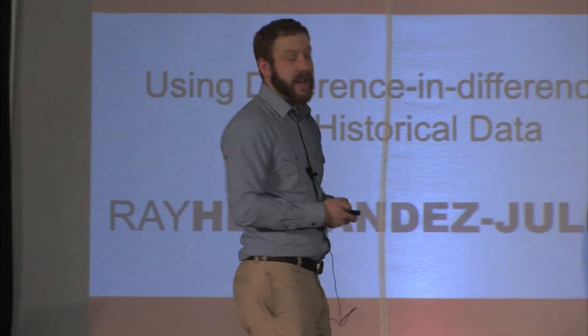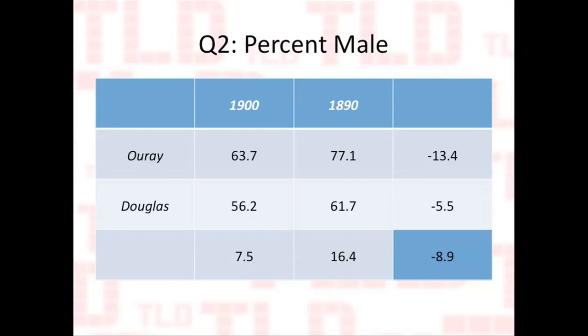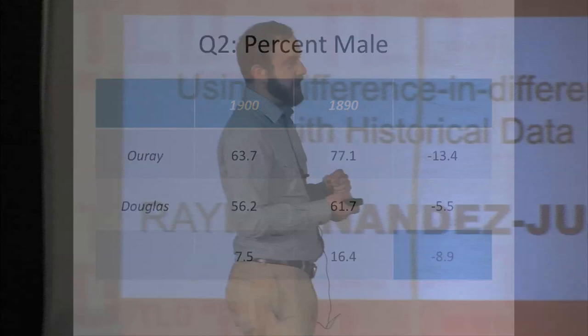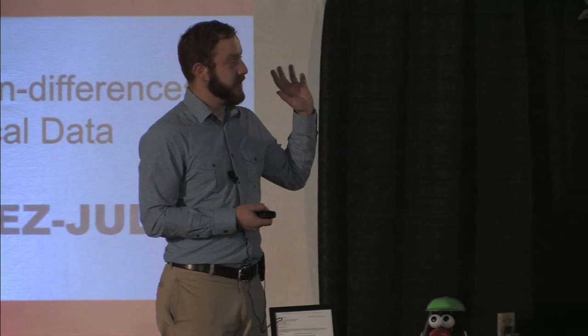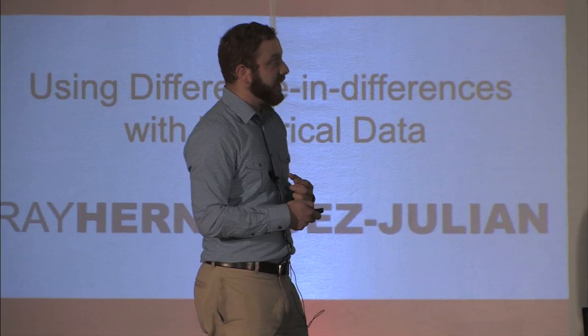Now let's look at percent male. In Uray County in 1890, it was 77.1% male, and in 1900 it was 63.7% male — a 13.4% decrease in the male share of population. In Douglas County, it goes from 61.7% to 56.2% — a difference of 5.5%. The difference in differences is 8.9%. What you can say is that when you see this local unemployment, there is out-migration from Uray County, and this out-migration is disproportionately male — the town is becoming much more even in male-female terms.